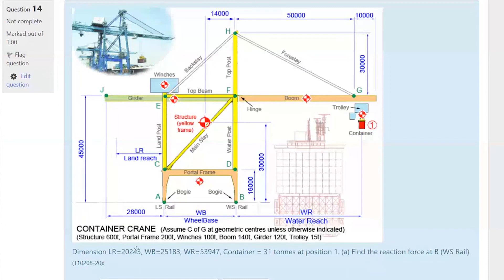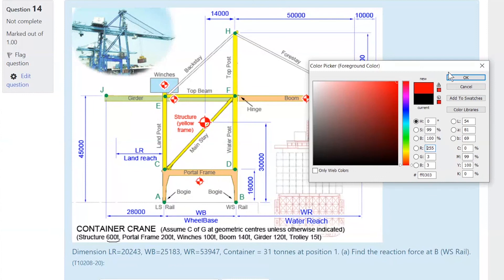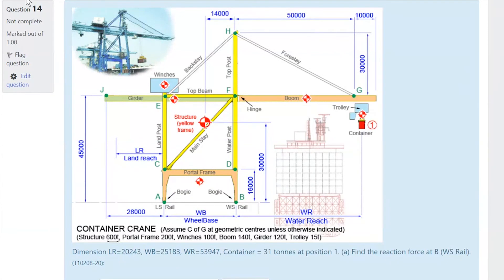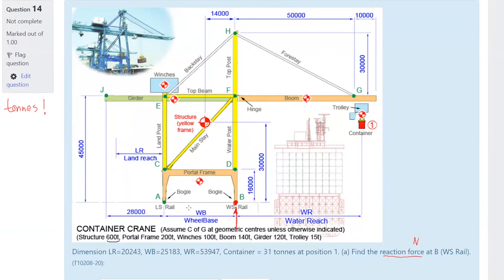A couple of things to note: units here are all in tons. We can work in tons throughout and convert to newtons at the end. We're trying to find the reaction force at B — there's an upward force here, assumed upward for safety. We're trying to find reaction at B.